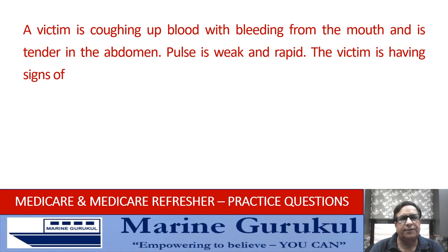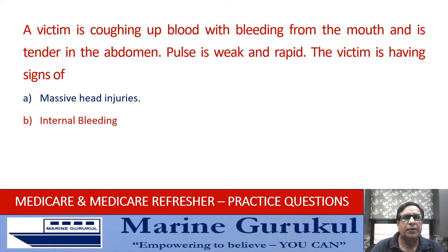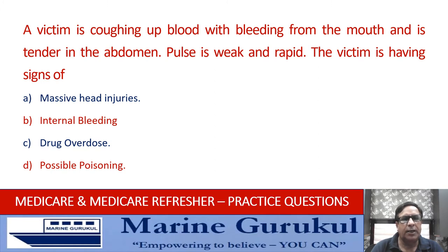A victim is coughing up blood, bleeding from the mouth, and is tender in the abdomen. The pulse is weak and rapid. These are all indicators of internal bleeding, so the answer is B — the victim is having signs of internal bleeding.